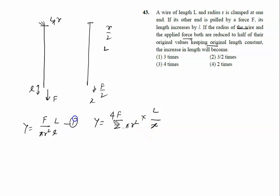When you say this is equation number 1, equation number 2, left hand side same, so right hand side must be same. F L upon pi R square L equal to 4, 2 to 4.